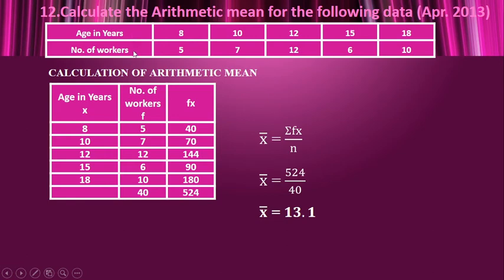Here again, age in years and number of workers are given. Age in years is x; number of workers is f. The x values are 8, 10, 12, 15, and 18. Frequency is 5, 7, 12, 6, 10. The total of f is 40 and we find fx — every frequency multiplied by its x value. The total of fx is σfx. Going to the formula: x̄ = σfx / n = 524 / 40. So x̄ is 13.1.